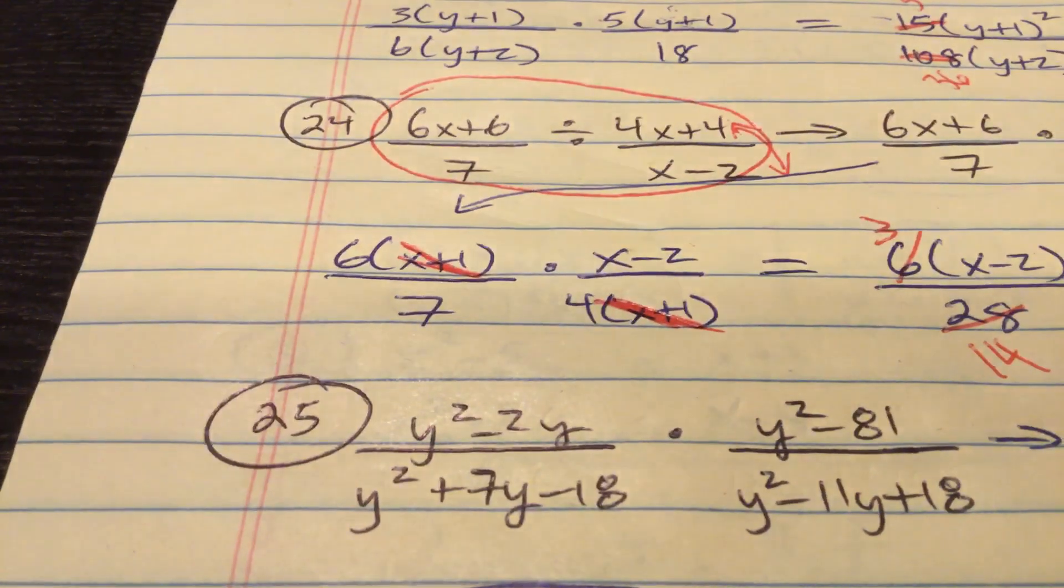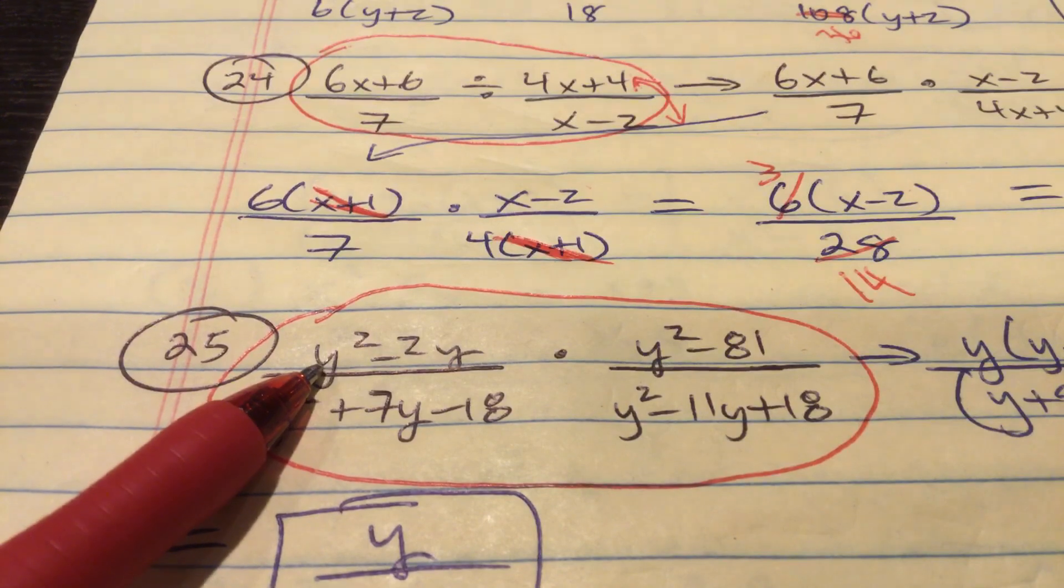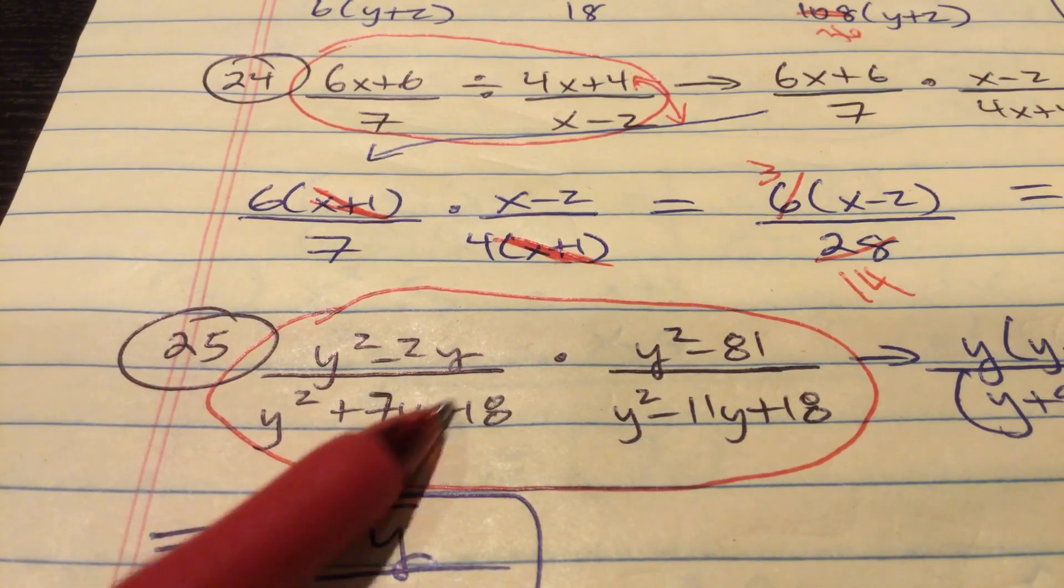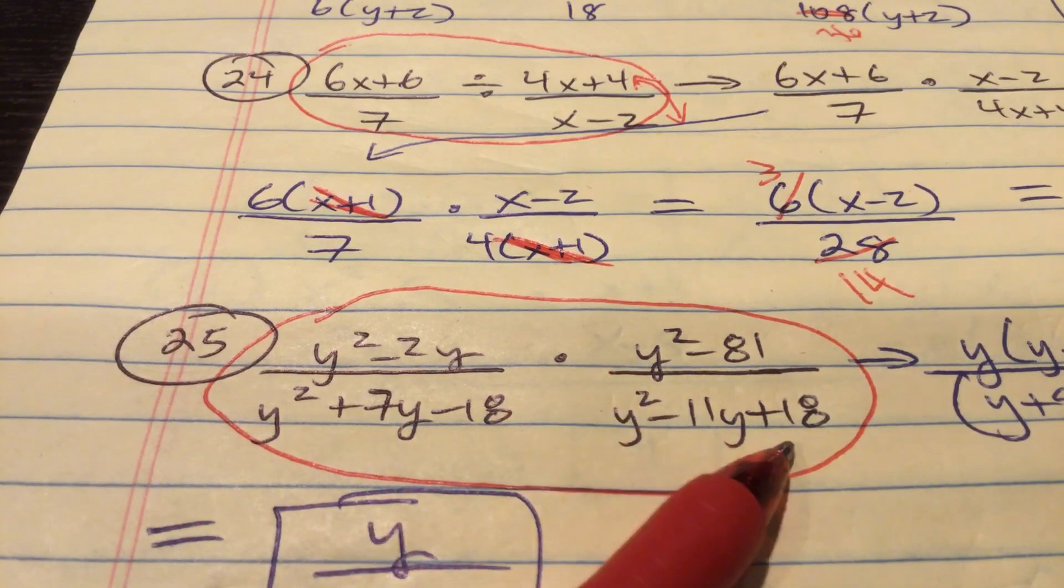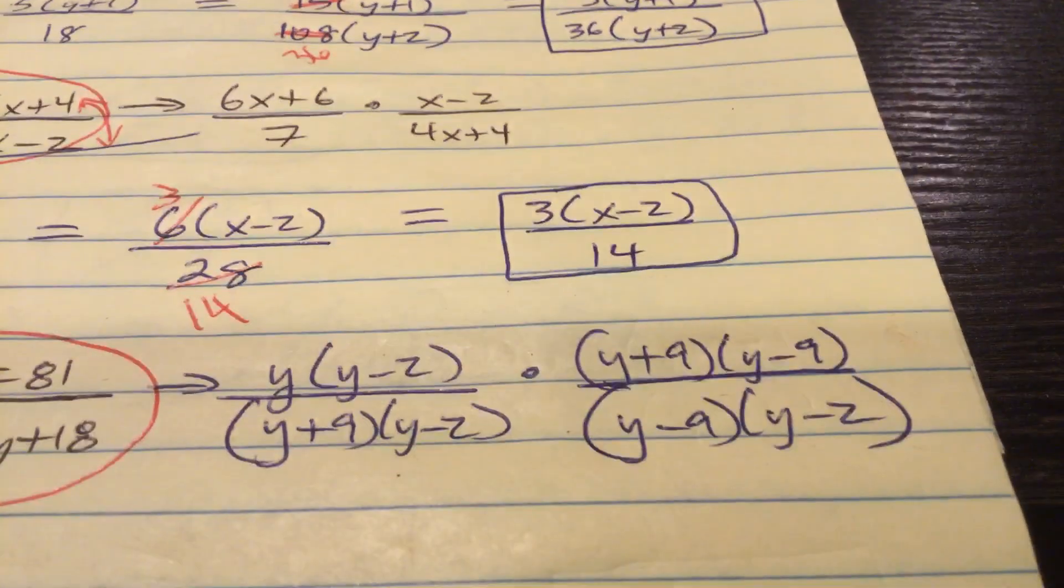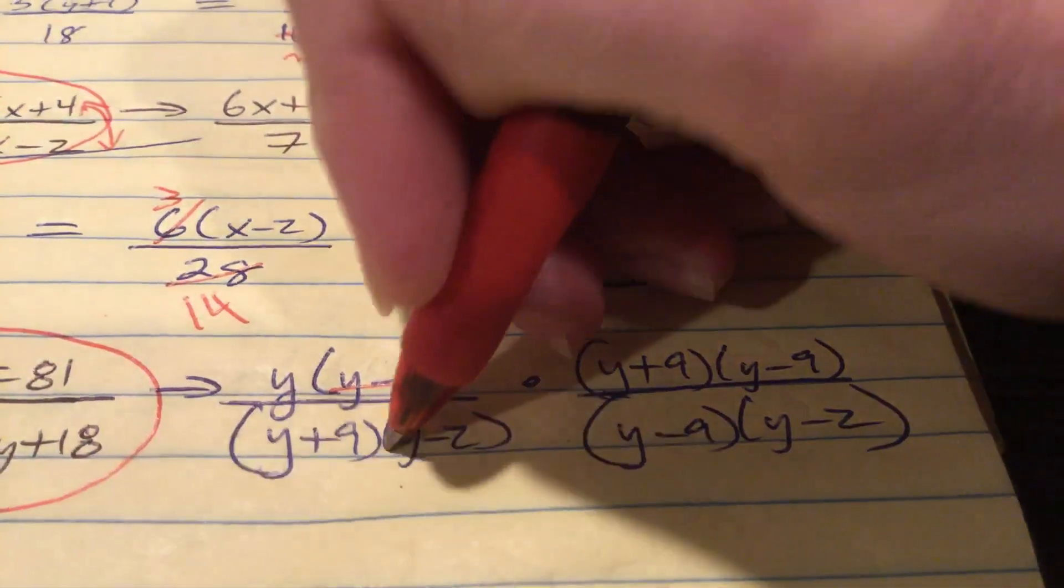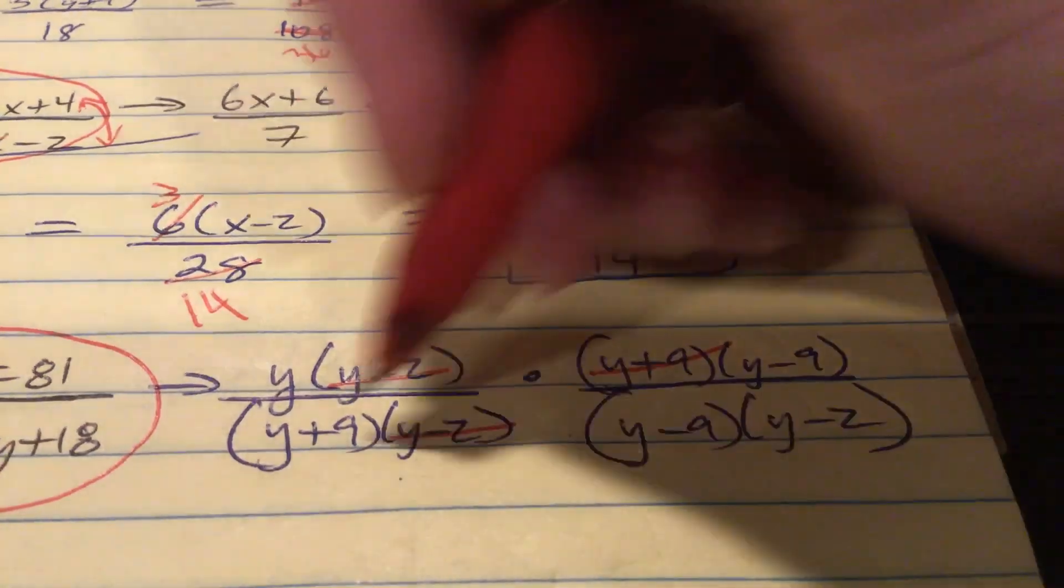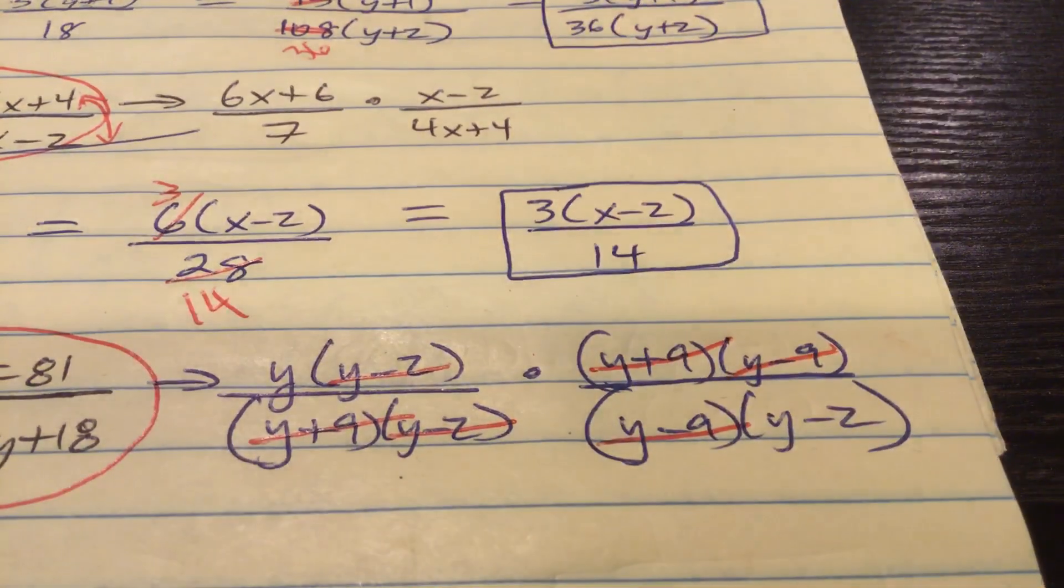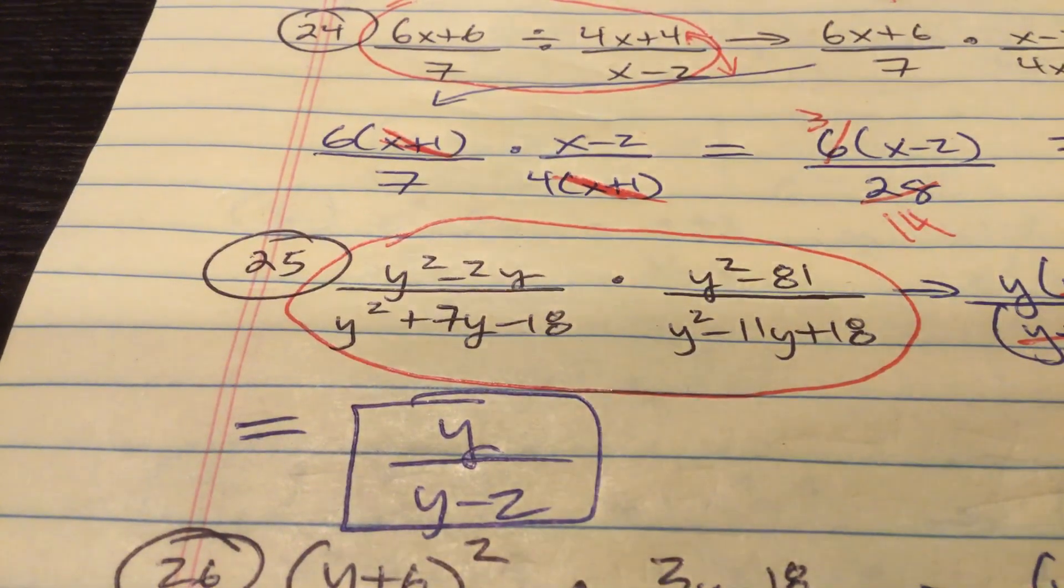Alright. 25, we're back to multiplying from the beginning. Here is 25. So I'm just going to start to factor. Everything gets factored here. So first numerator, you can just take out the y that they have in common. First denominator. What multiplies to 18 differs by 7. y plus 9, y minus 2. Difference of two perfect squares. y plus 9, y minus 9. What multiplies to 18 adds to a negative 11. y minus 2, y minus 9. The order doesn't matter there. That's how everything factors. When you have factored everything, then it's time to see what cancels. Alright. So first off, y minus 2 over y minus 2. Bye-bye. y plus 9 over y minus 9. Or y plus 9 over y plus 9. Bye-bye. And then y minus 9 over y minus 9. All you're left with is y over y minus 2. There it is.